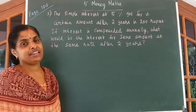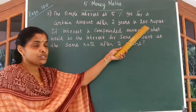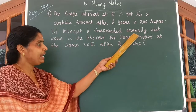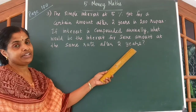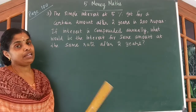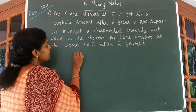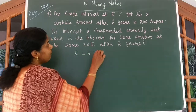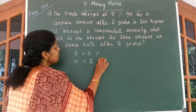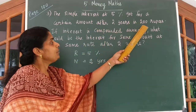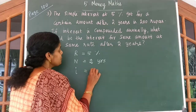Look at the last question in this exercise. The simple interest at 5% per year for a certain amount after two years is ₹200. If interest is compounded annually, what would be the interest for the same amount at the same rate after two years? Here you are not given the amount — we have to find it. R = 5%, N = 2 years, and simple interest I = ₹200.